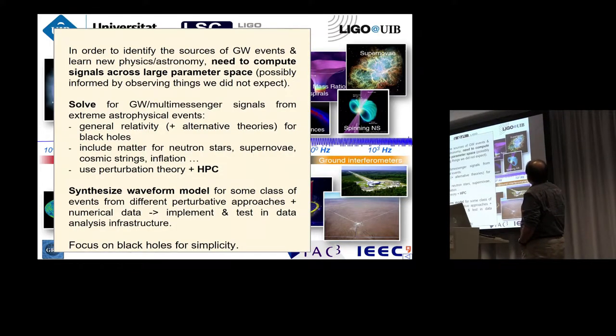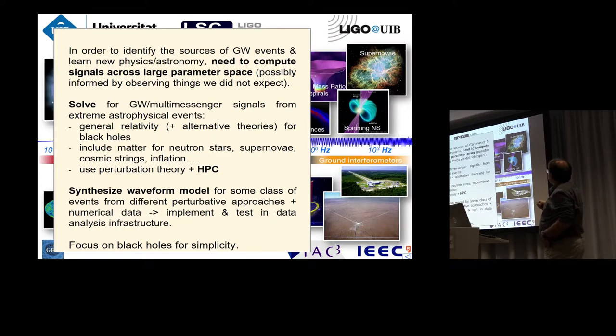As you have seen, in order to identify these sources, we have to do basically two things. One is we have to understand the signals. So we need to compute these signals across some large parameter space of masses and spins, for example. The other thing is that we also have to understand the noise, and that's what Andy is going to talk about afterwards. And then we have to solve for the gravitational wave, but also maybe the multi-messenger signals from these extreme astrophysical events that we're interested in.